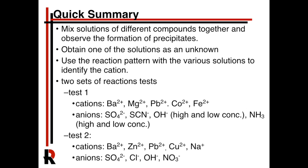You're going to have two sets of tests. One is with barium, magnesium, lead, cobalt, and iron (iron is actually 3+), and then the anions are listed there. You're also going to do high and low concentrations of hydroxide and high and low concentrations of ammonia.